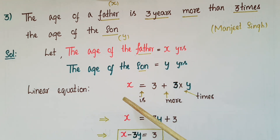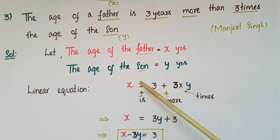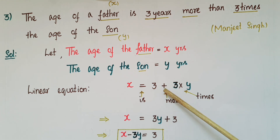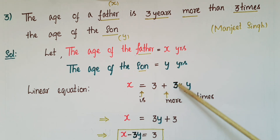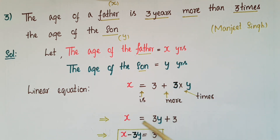So the linear equation in two variables is: x equals 3 plus 3 times the age of the son, that is y. So x equals 3 plus 3y, or x equals 3y plus 3, which gives x minus 3y equals 3.